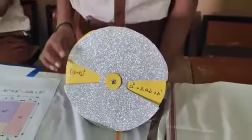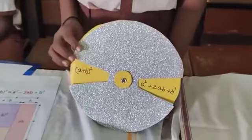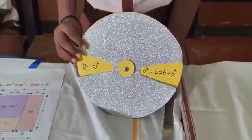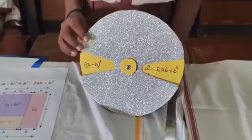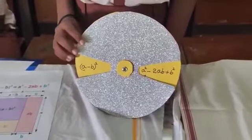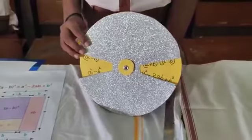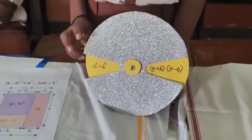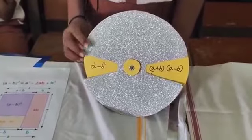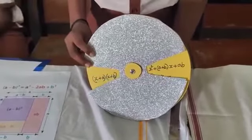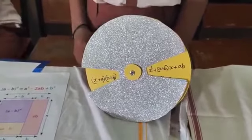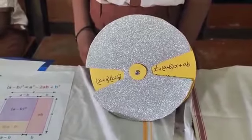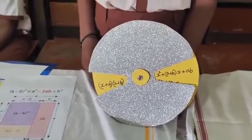a plus b whole square equals a square plus 2ab plus b square. a minus b whole square equals a square minus 2ab plus b square. a square minus b square equals a plus b into a minus b. x plus a into x plus b equals x square plus a plus b into x plus a into b.